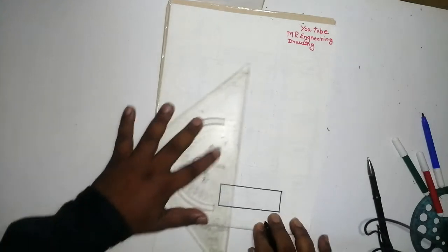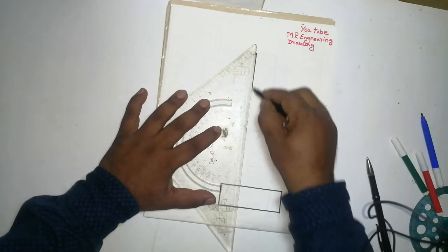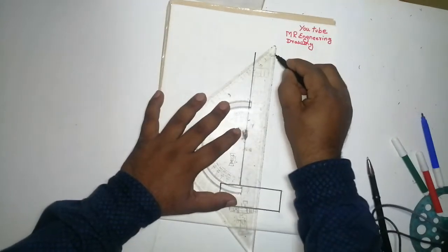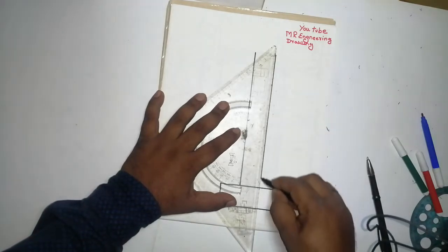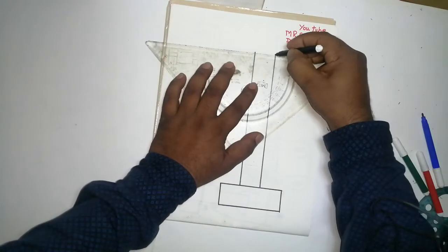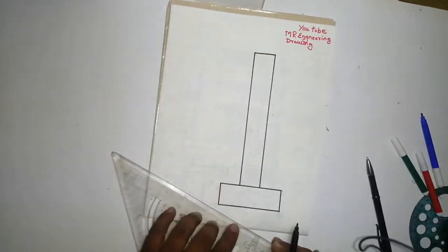Then after that, the height we have to write, I have taken 160 mm. One more 60 mm. So, join like this. This is the height of the scale, this is the base.